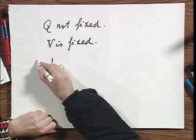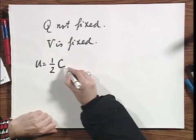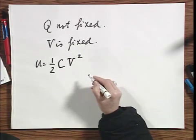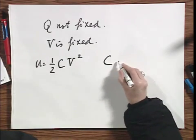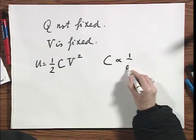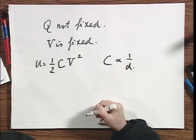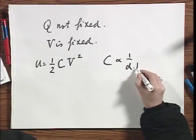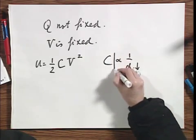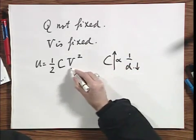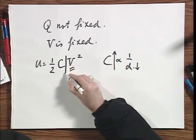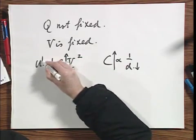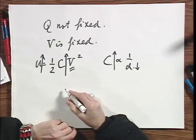Since U equals one-half CV squared, and since C is proportional to 1 over D, it is immediately obvious that if D goes down, and C goes up therefore, and V remains constant, that now since C goes up, U goes up.